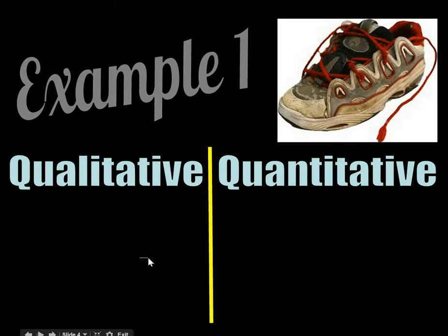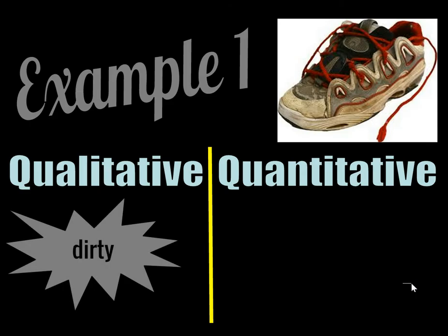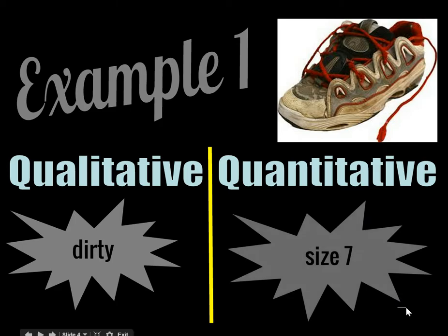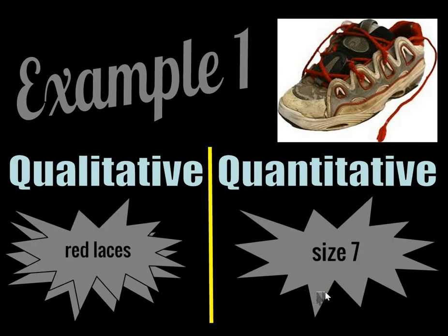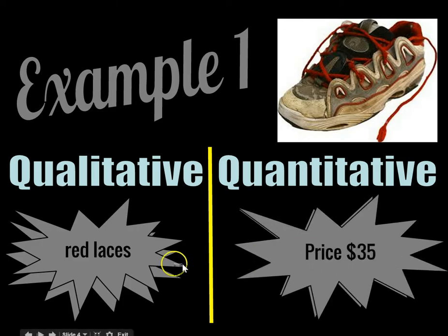We're going to do some examples here by describing objects using qualitative and quantitative measurements. So here we have a picture of an old shoe. A qualitative description would be 'dirty.' Quantitative would be size 7. Another qualitative measurement would be 'red laces.' Another quantitative measurement would be the cost — the price is $35.